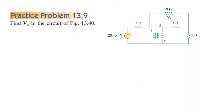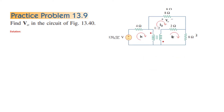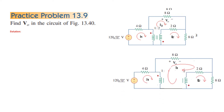Now let's look at practice problem 13.9. We have to find V0, the voltage across the 8 ohm resistance. The transformer has a dot on the left-hand side top and at the bottom right, and the turns ratio is 1:2. The first thing we will do is mark the three mesh currents I1, I2, and I3. To make the meshes more clearly visible, I have separated the two coils so the third mesh is now clearly visible.